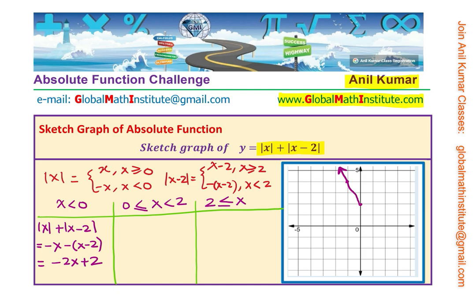Now let us consider the center portion between 0 and 2. In this interval, absolute value of x equals x, but absolute value of x minus 2 is still negative of x minus 2. Adding them: x plus negative of x minus 2 gives x minus x plus 2, which equals 2. So between 0 and 2, the function is constant at y equals 2 — a flat horizontal segment.